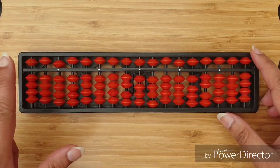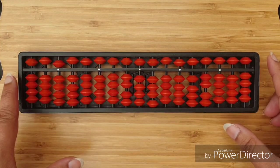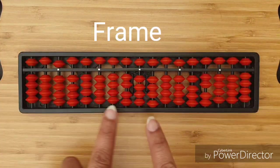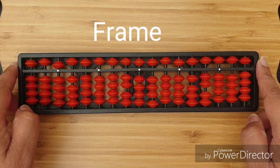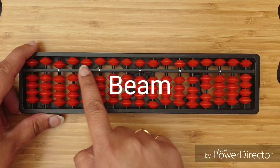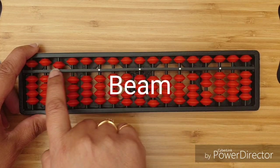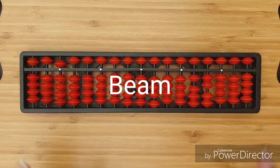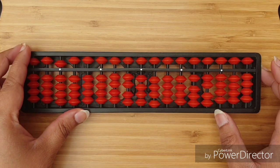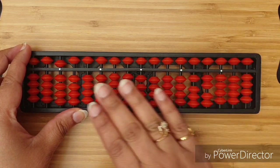This is a 17 rod student abacus. This outer structure is called frame of the abacus. This middle bar is called beam of the abacus. It divides the abacus into upper and lower sections.